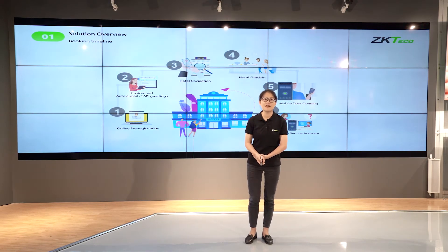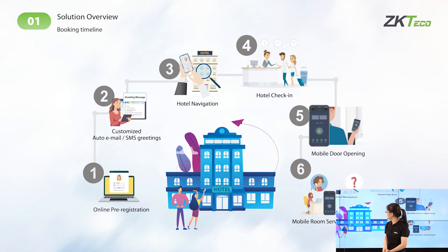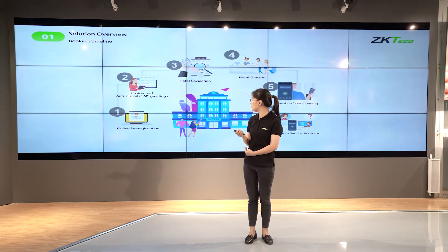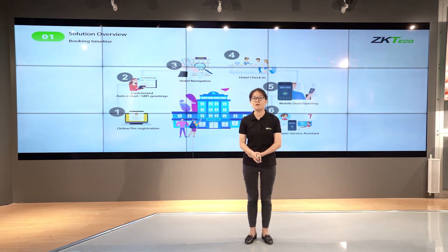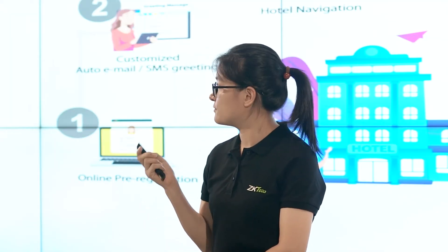In order to better understand our solution, we have outlined the whole process of checking in and checking out. There are a few key points which make it differ from the traditional solution. At Step 2, the online pre-registration, you will get an email or SMS greeting message from our system. At Step 5, you can use your mobile phone to open your door and also call for room service.